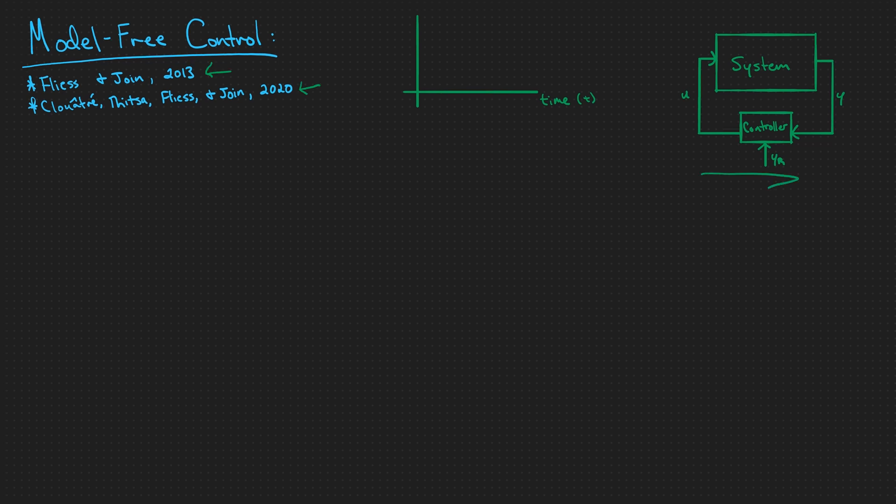Imagine you have a system like this one over here where we can measure its output y, and we have a reference trajectory y sub r that we want the system's output to follow. We would like to devise a control input u that will make the output of the system y follow the reference y sub r.